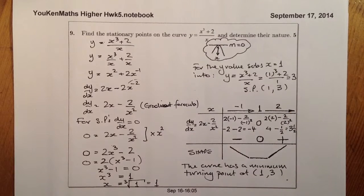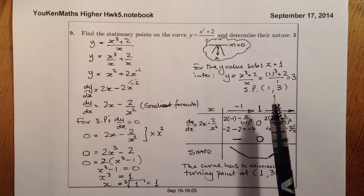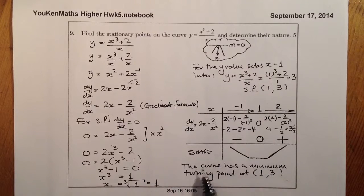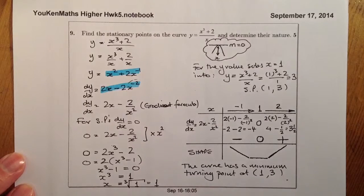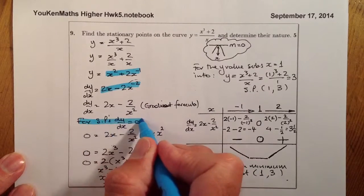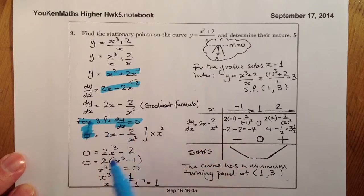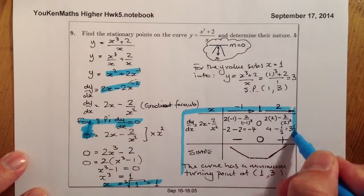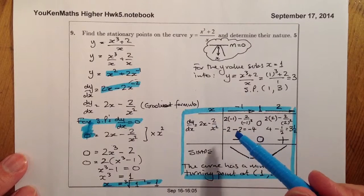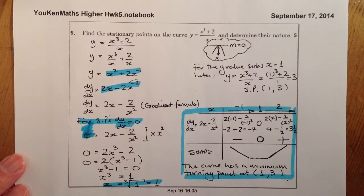So that's the question complete. I found the stationary point — there's only one, at (1, 3) — and I've determined the nature: it's a minimum turning point. For the 5 marks: one mark for preparing the expression correctly for differentiation, one for differentiating correctly, one for setting dy by dx equal to 0, one for getting x equals 1, and the final mark for a correct nature table and a clear statement of the result.